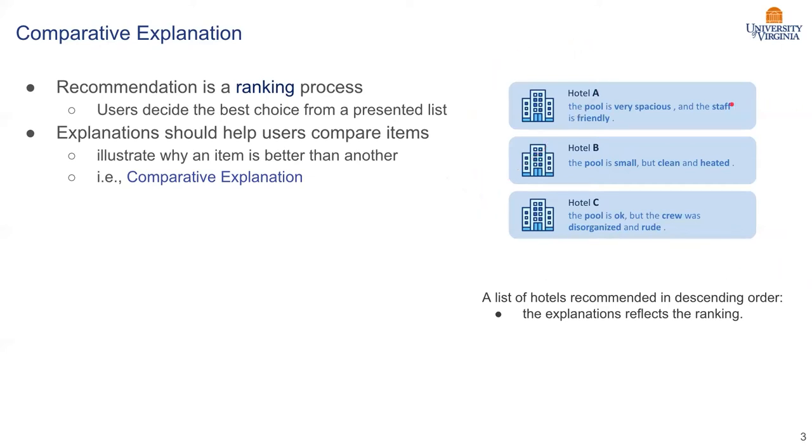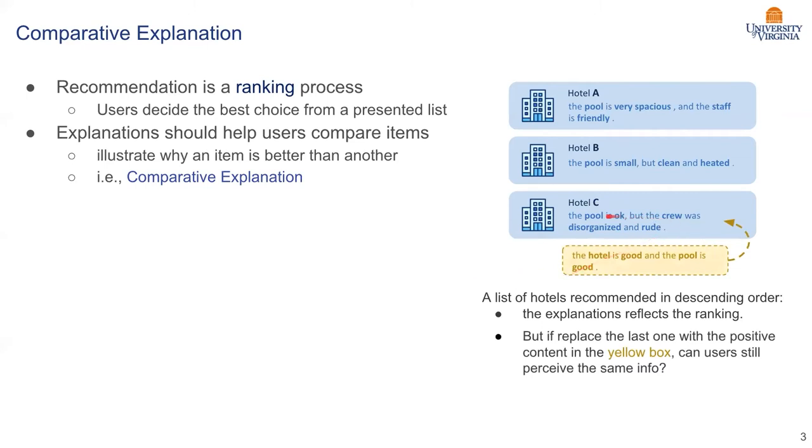Let's use this right side hotel recommendation as an example. There are three hotels recommended in descending order. If we just read through this short explanation, most users could feel why they are recommended in this ranking. They can see why hotel A is better than the others, why C is probably not that good. But if we replace the explanation hotel C with this one in the dashed yellow box, can the user still get the same conclusion? Probably not, because from this explanation seems like everything is good. The hotel is good. The pool is good. Everything is good. Then why this hotel is not recommended as high as others. The user may get confused.